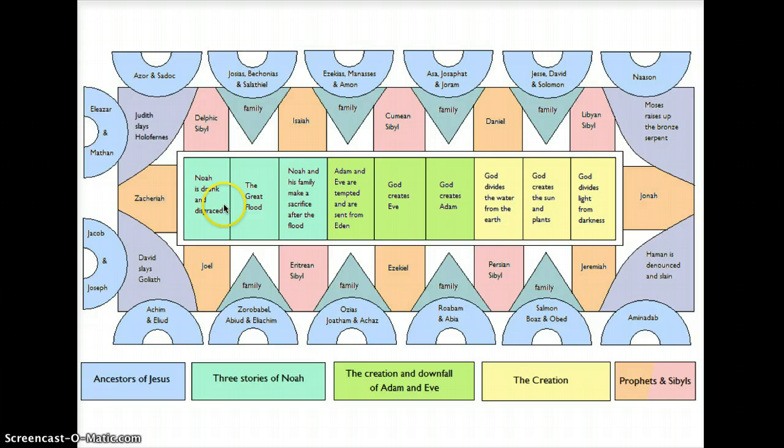Here it is labeled as God Divides Light from Darkness. It is located directly above the altar where Mass is celebrated, and even though it is the first of the nine panels, it was the last one to be painted.